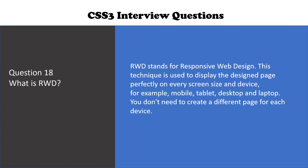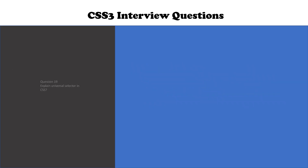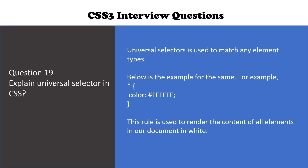The next question is: explain the universal selector in CSS. The universal selector is used to match any element types. Below is the example where we are using an asterisk, and the color is defined. This rule is used to render the content of all elements in our document in white.